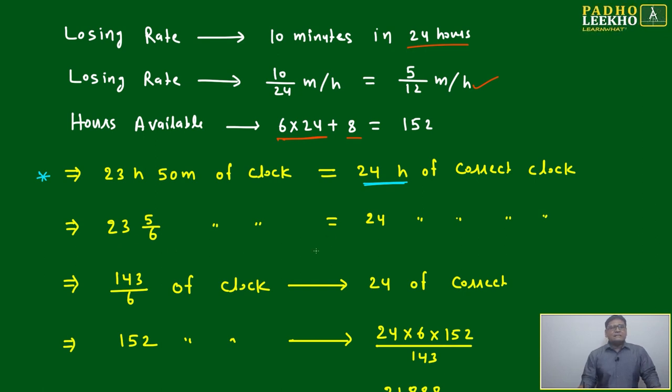23 hours 50 minutes equals 143/6 hours. We've just converted to a different format, not a different figure - same figure. In place of 24 hours, we have 143/6 of clock equals 24 hours. We've just converted the format, nothing else.